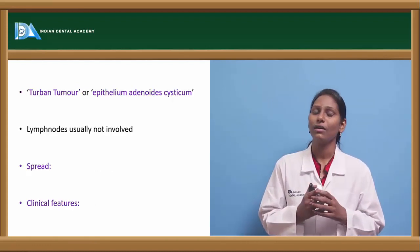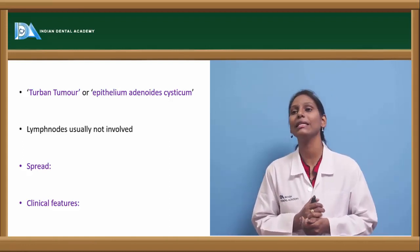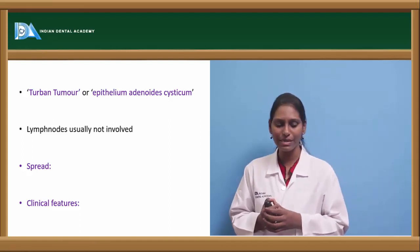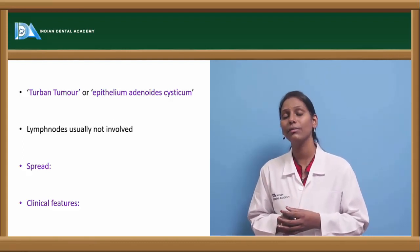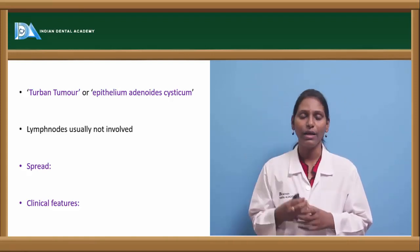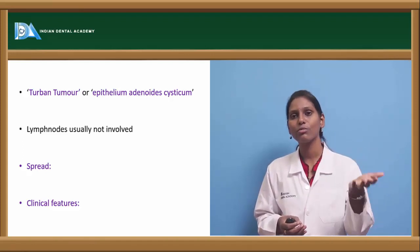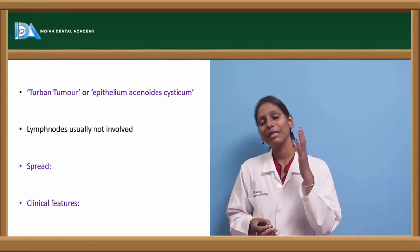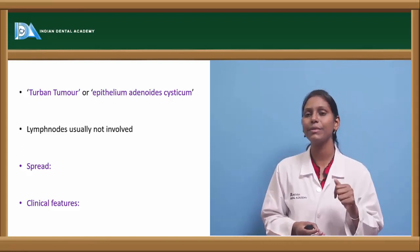There is a variant of basal cell carcinoma called turban tumor or epithelium adenoides cysticum. In the turban tumor, they arise from the basal cells of the hair follicles and glands — specifically the basal cells of the scalp, hair follicles, and skull. Since basal cell carcinoma occurs at the basal layer of the epidermis, similarly the basal cells of the scalp and hair follicles are affected, hence the name turban tumor.